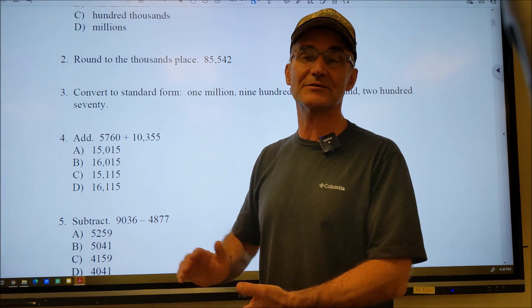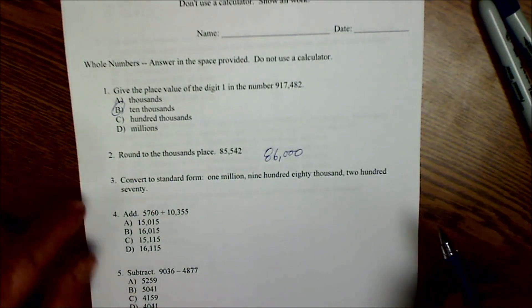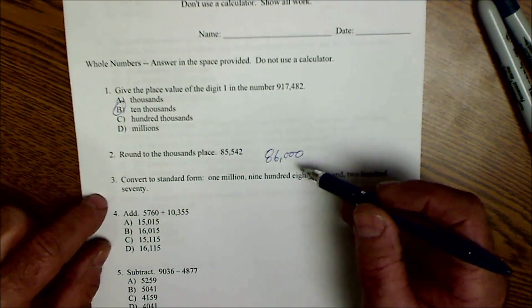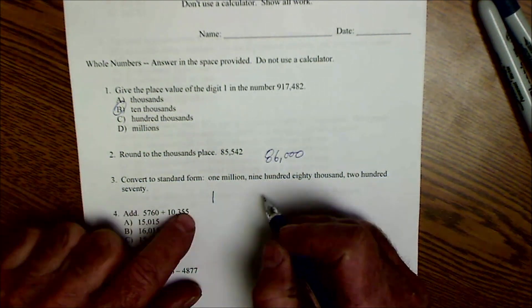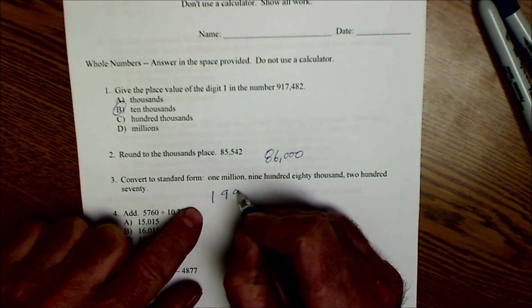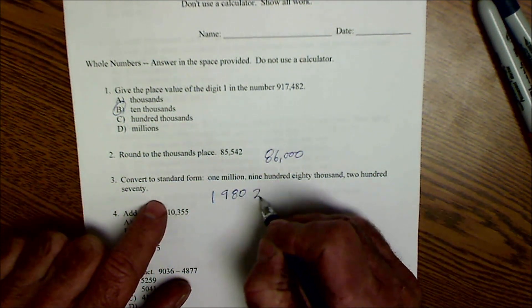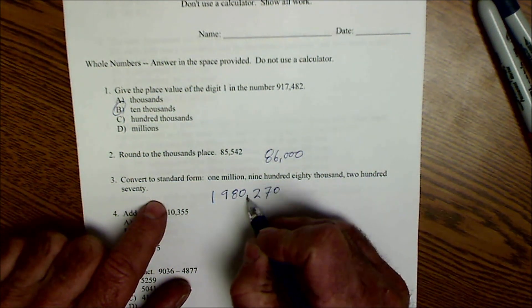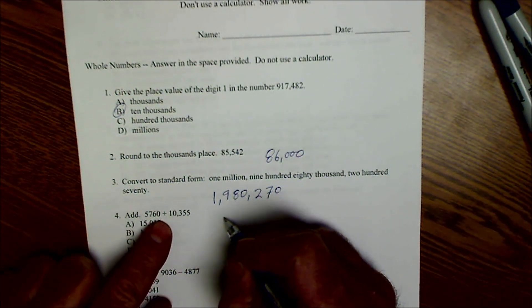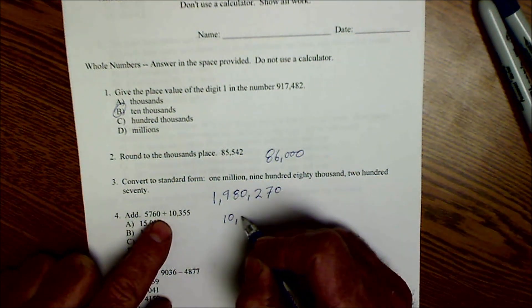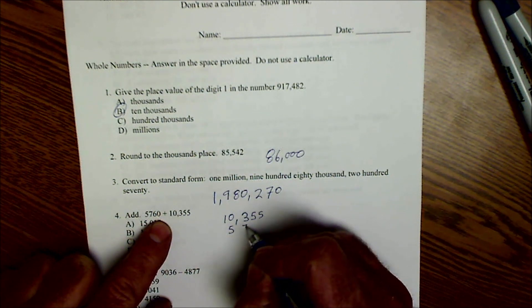I'm going to go ahead and put the camera over my shoulder now and show you how I do these on paper. So there's the first one: 10,000. Round it to 86. Number three: convert to standard form — 1,980,270. So that looks like that. Next one, add these. The best way to add the numbers is to take the larger one and put it on top: 10,355 plus 5,760.